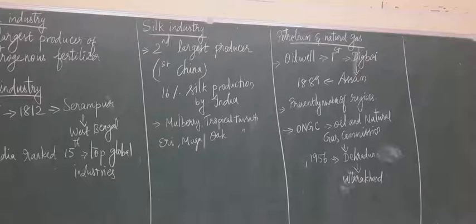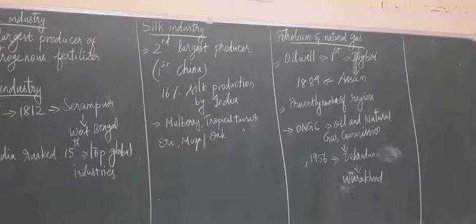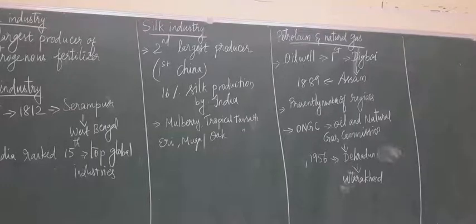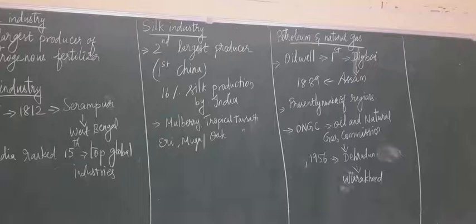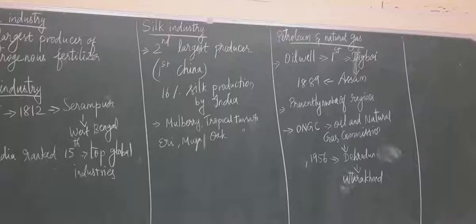These are all the large scale industries: iron and steel, jute, cotton and textile, sugar, fertilizer, paper, silk, and petroleum and natural gas. These industries require huge infrastructure, large manpower, machinery, and also a large amount of capital.